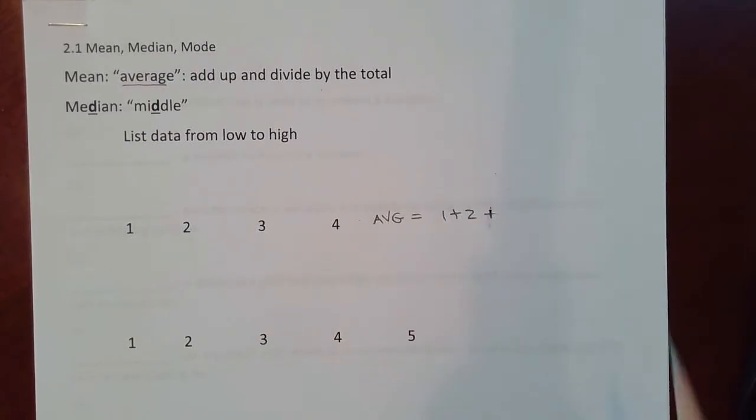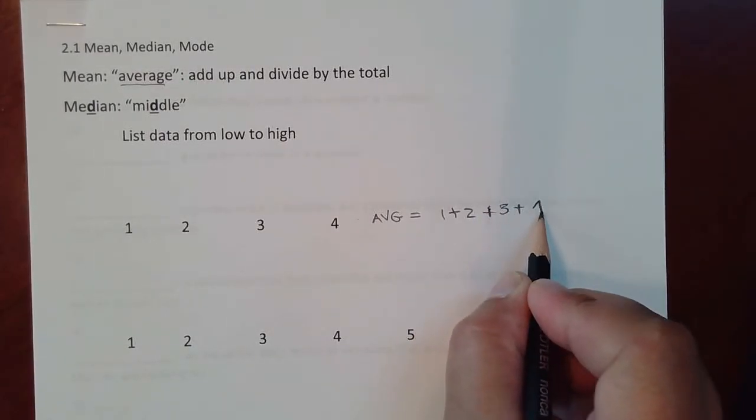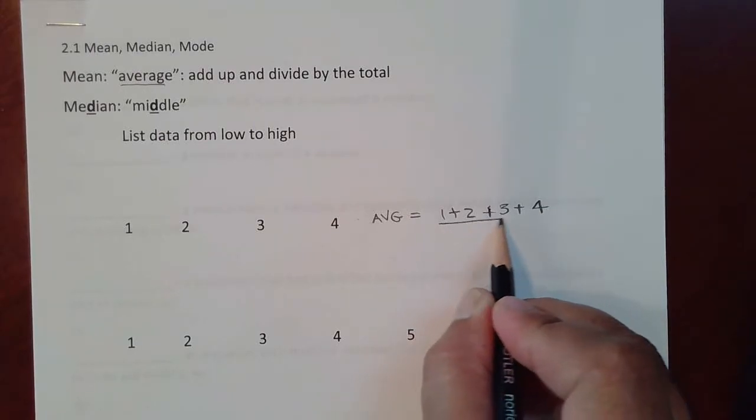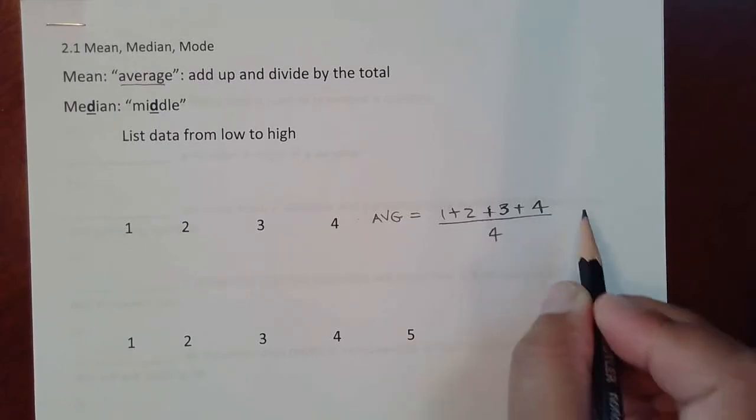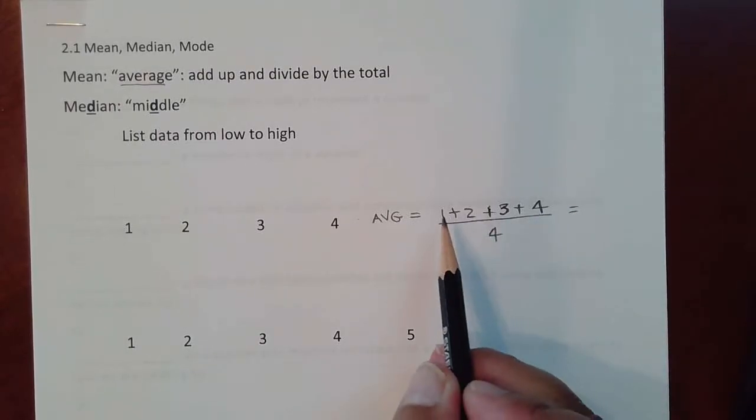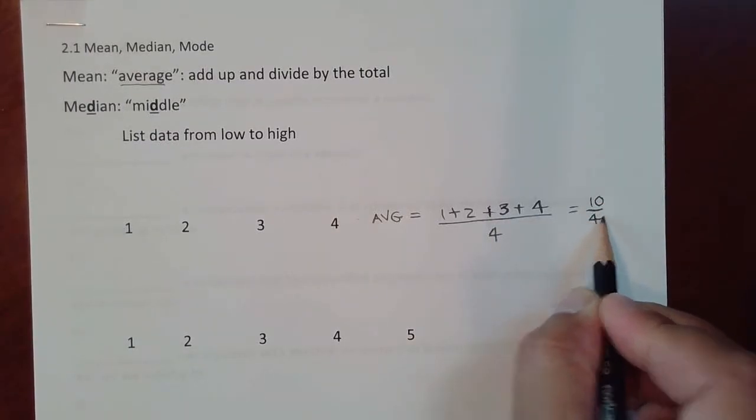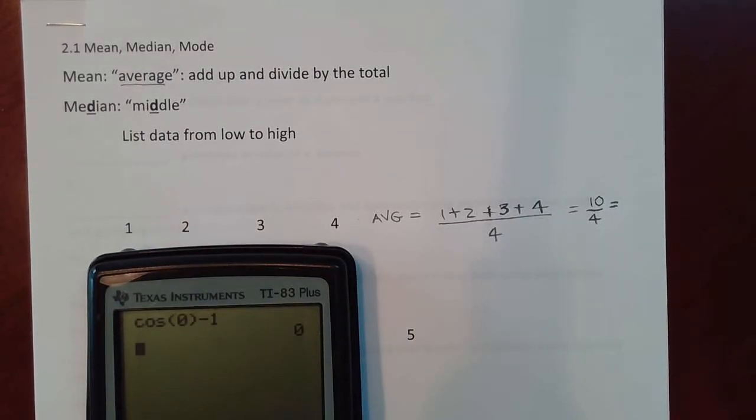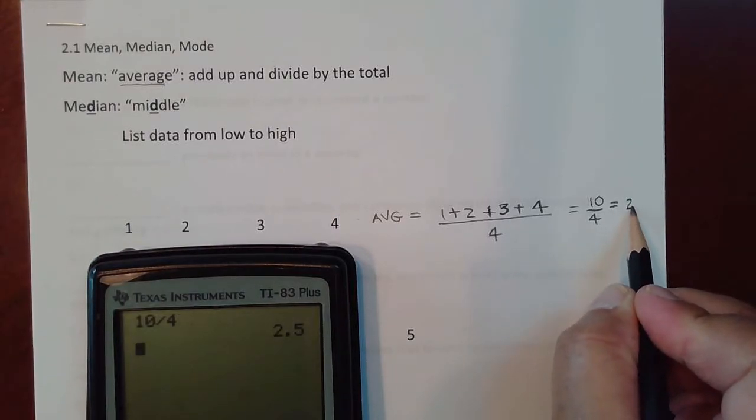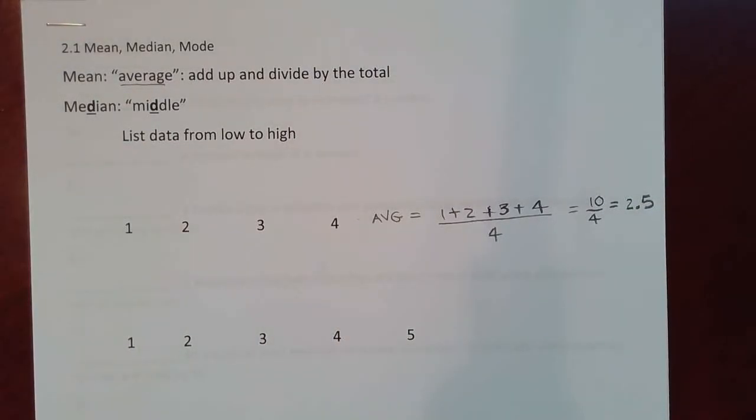One plus two plus three plus four, and then you're going to divide by how many numbers you see here, which there are four of them. You can add this up in your calculator. That would be three and three is six plus four is 10, 10 divided by four, 2.5. So that is one way to describe the numbers.